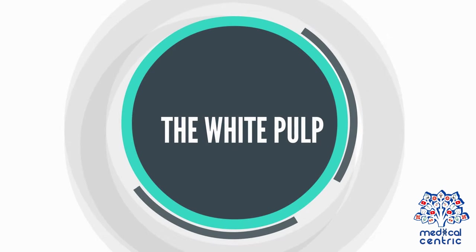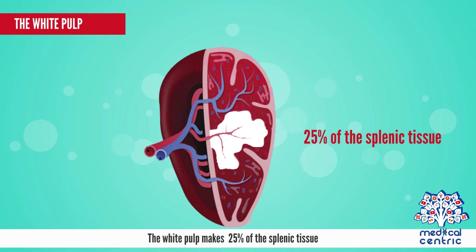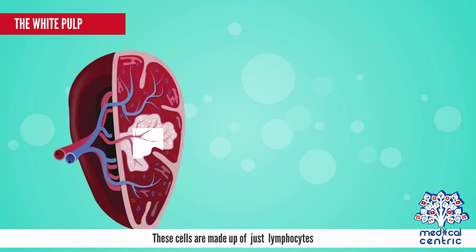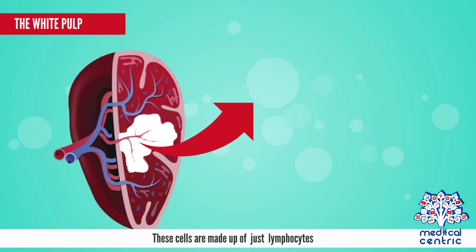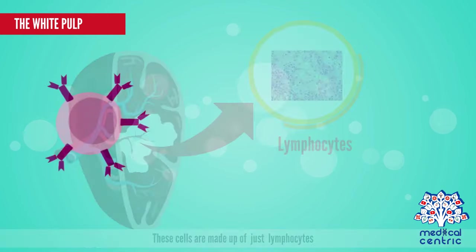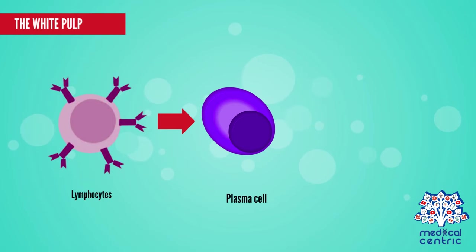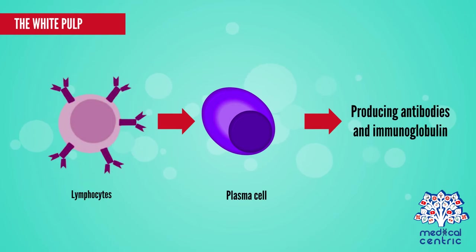The white pulp makes up 25 percent of the splenic tissue. These cells are made up of just lymphocytes. It is the lymphocytes that transform into plasma cells that are capable of producing antibodies and immunoglobulins.